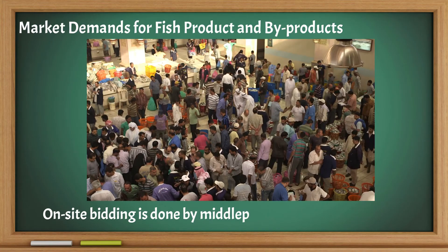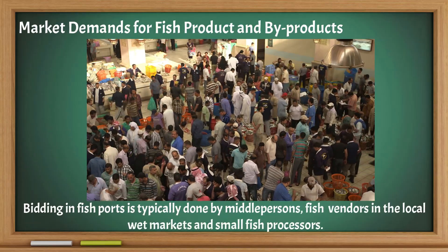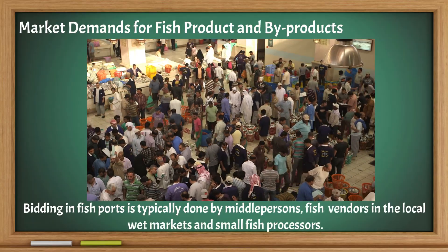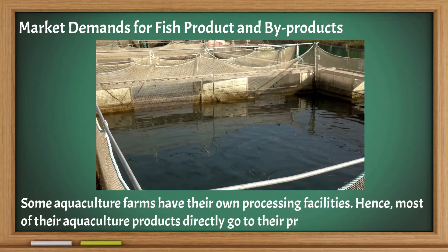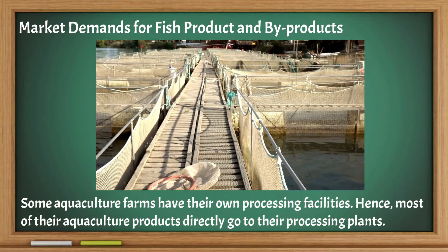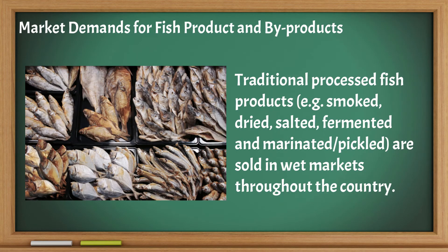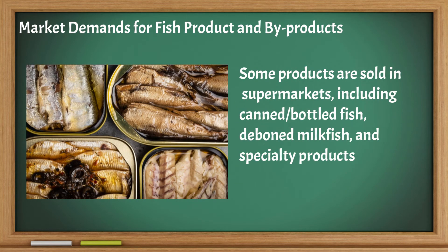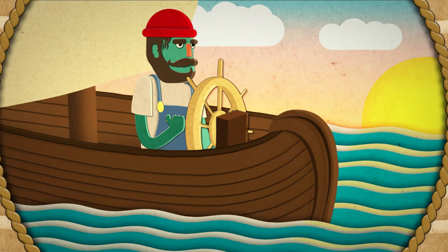On-site bidding is done by middle persons and fish exporters. Bidding in fish ports is typically done by middle persons, fish vendors in the local wet markets, and small fish processors. Some aquaculture farms have their own processing facilities, so most of their products go directly to their processing plants. Traditional processed fish products are sold in wet markets throughout the country. Some products are sold in supermarkets, including canned or bottled fish, deboned milkfish, and specialty products like pasteurized fish paste.